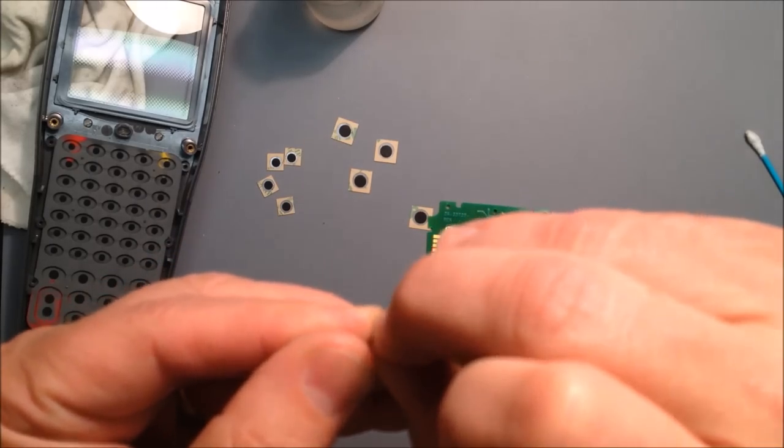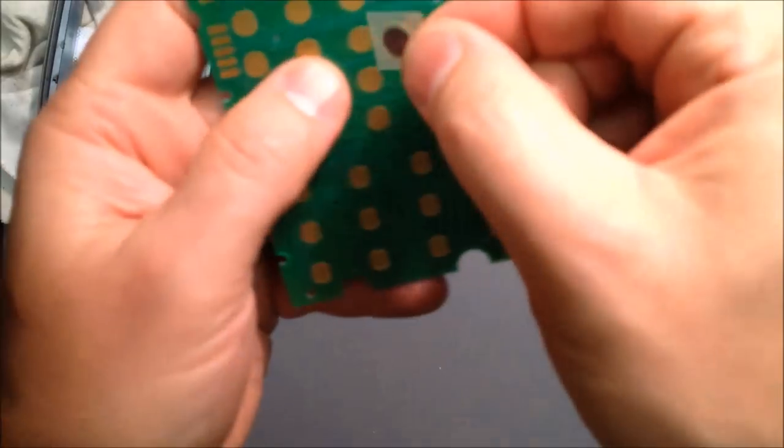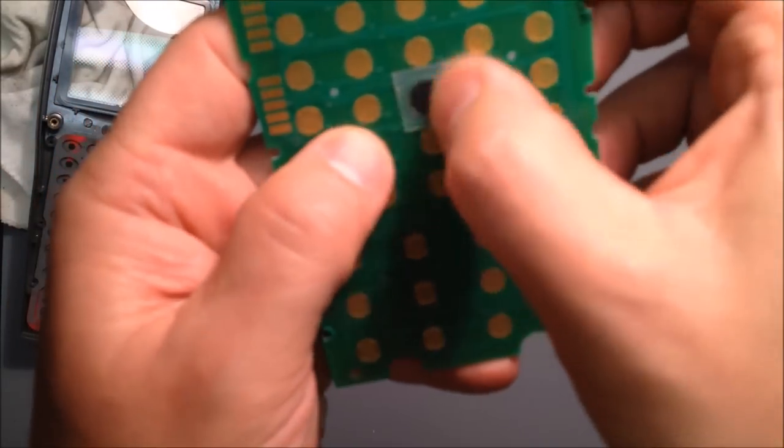Basically you can just peel it off. Let's say you wanted to fix this button there. You just line up the black dot over the button contact.